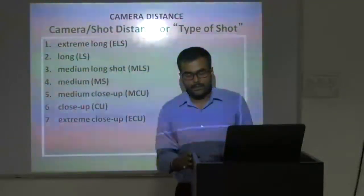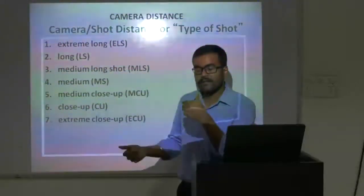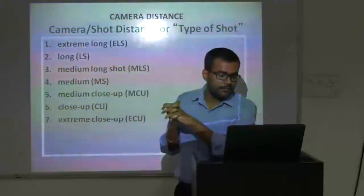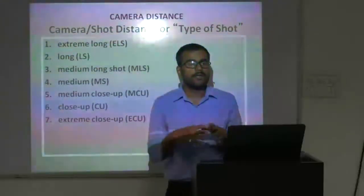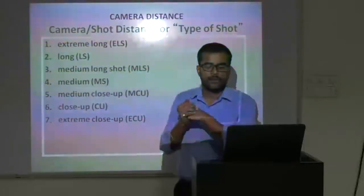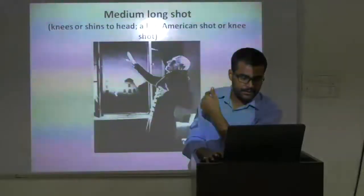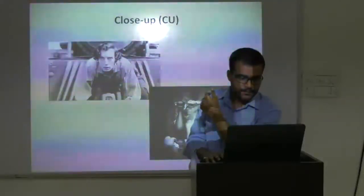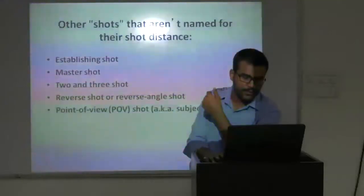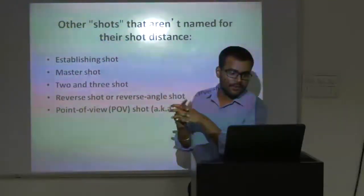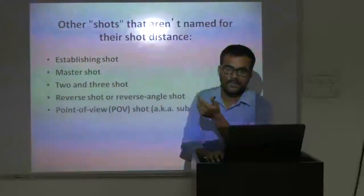So extreme close-ups are basically to establish two situations in between. Then long shots are to show the environment, more or less the environment. And then we have medium long shots, which we usually use while we are tracking or chasing someone. Then we have medium shots. Other than those shots, we have establishing shot, master shot, two-shot or three-shot, reverse shot or reverse angle shot, and then POV, also known as subjective shot.